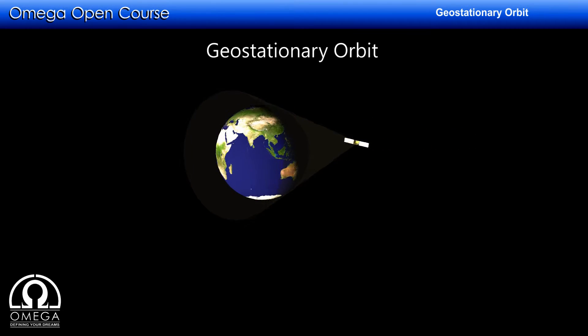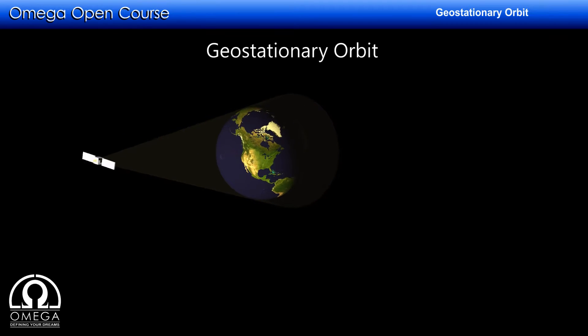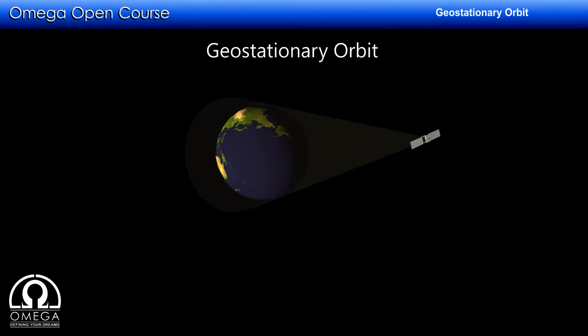As can be seen in the animation, the satellite moves in perfect synchronization with the Earth's rotation. Thus, to an observer on the Earth, its position in the sky will remain fixed.